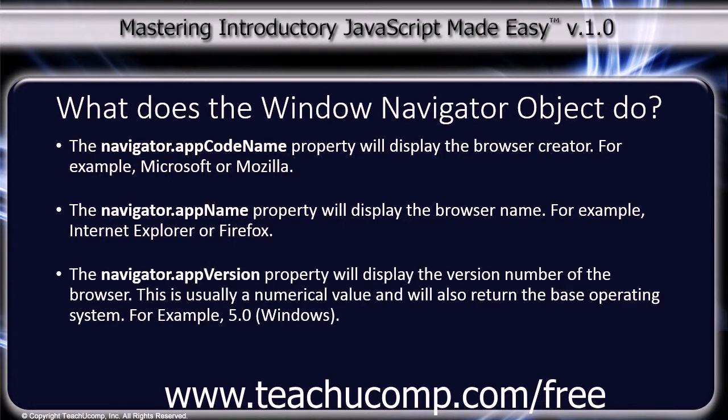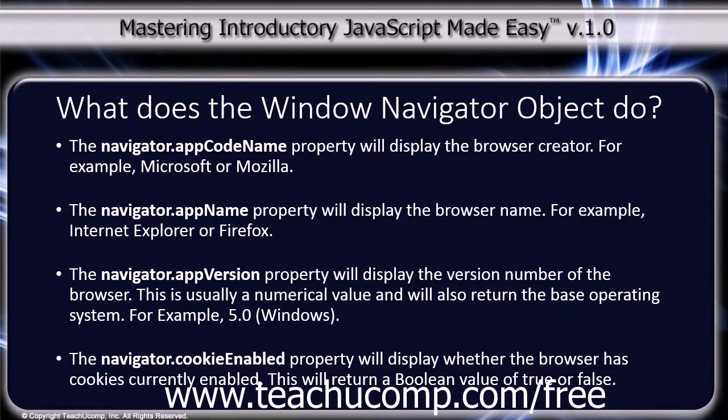The navigator.appVersion property will display the version number of the browser. This is usually a numerical value and will also return the base operating system — for example, 5.0 with Windows in parentheses. The navigator.cookieEnabled property will display whether the browser has cookies currently enabled, returning a boolean value of true or false.